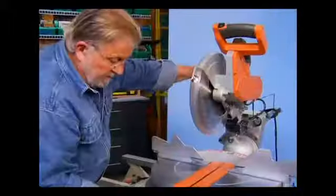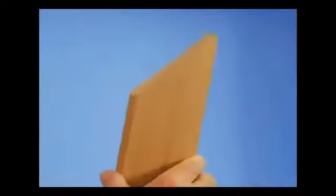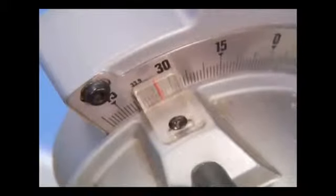One of the trickiest things about installing crown molding is cutting the correct angles at the corners. Each corner requires two angles: a miter angle which is cut across the face of the molding, and a bevel angle that's formed across the end or edge.